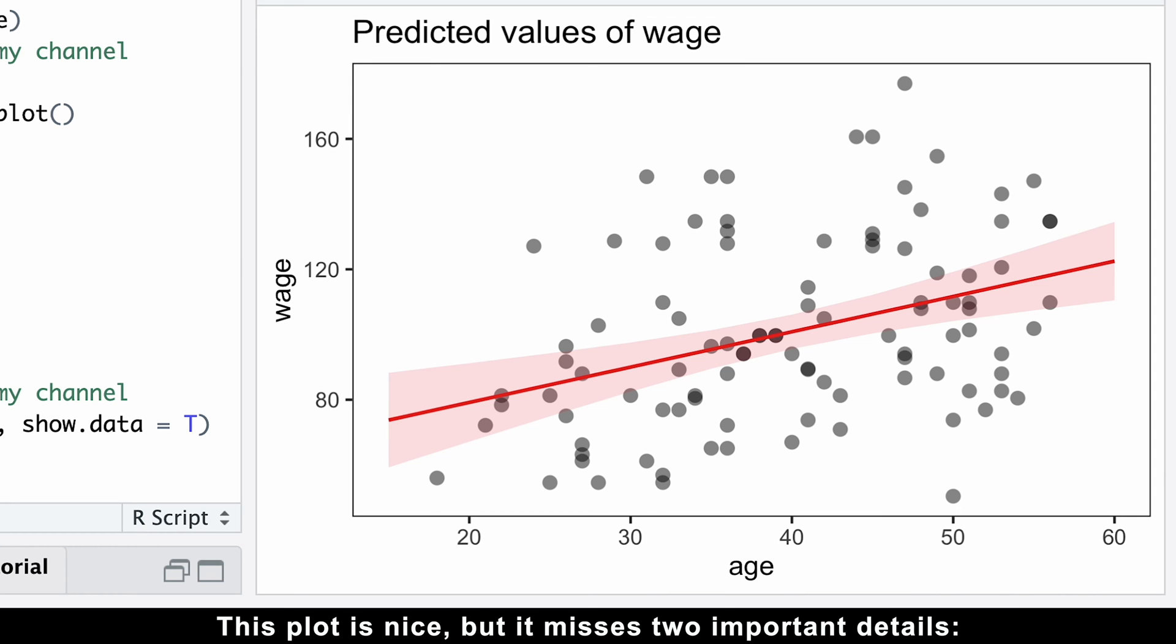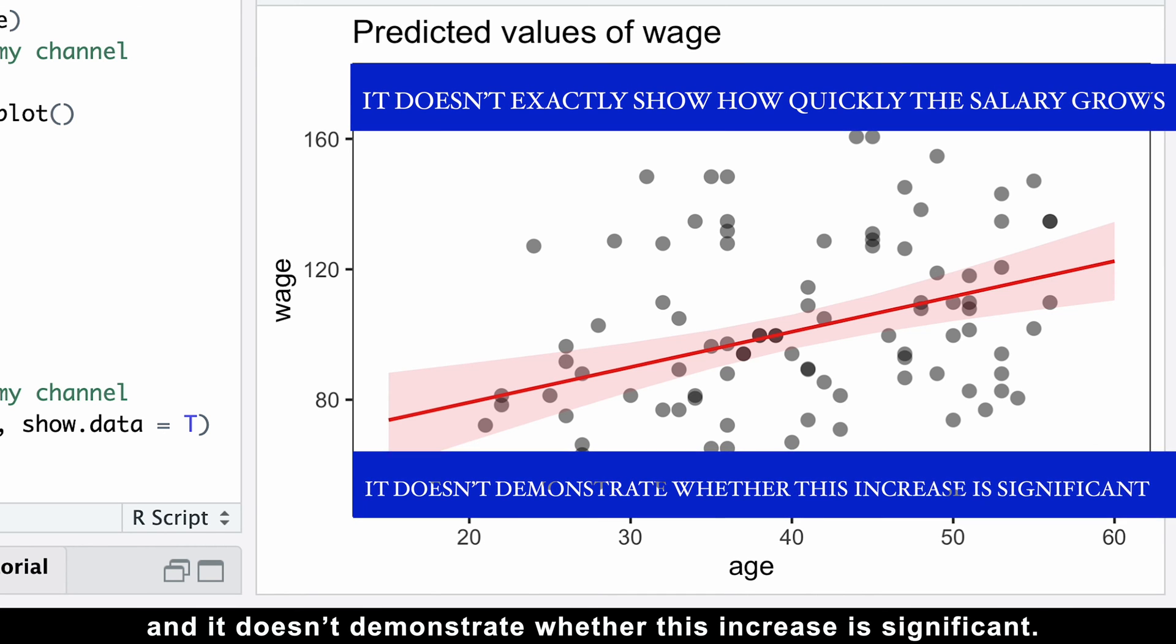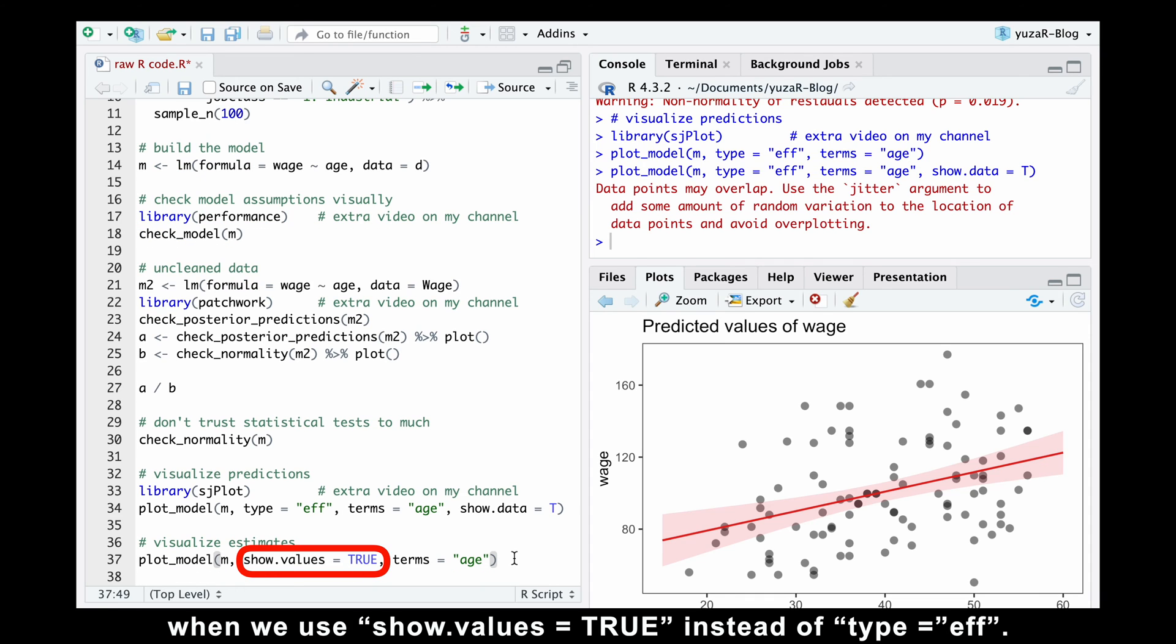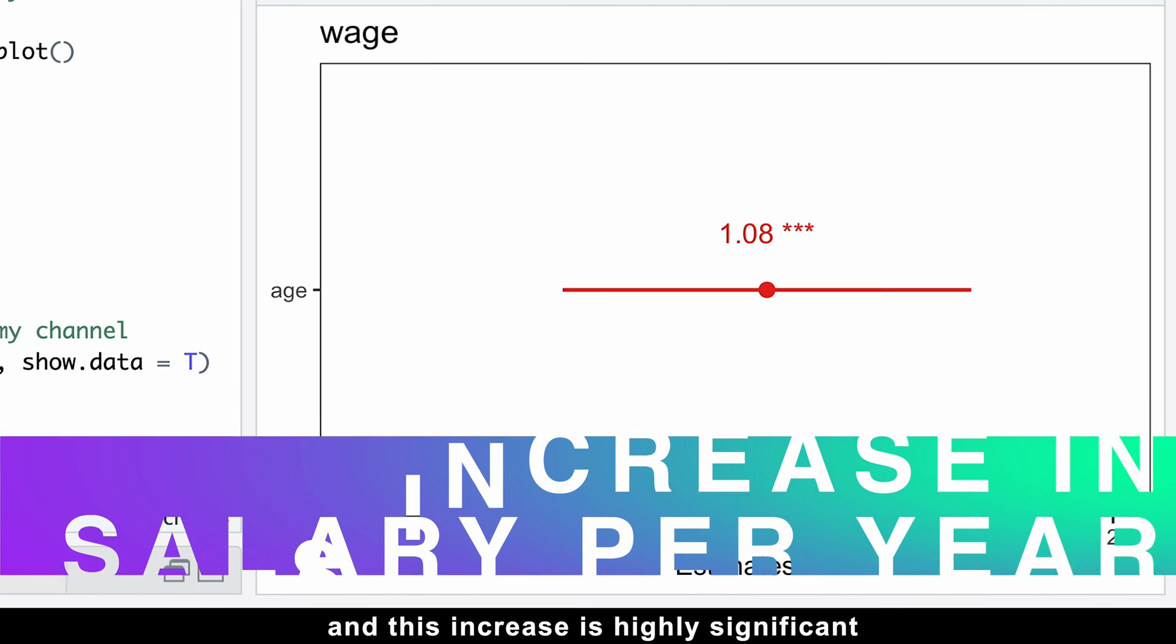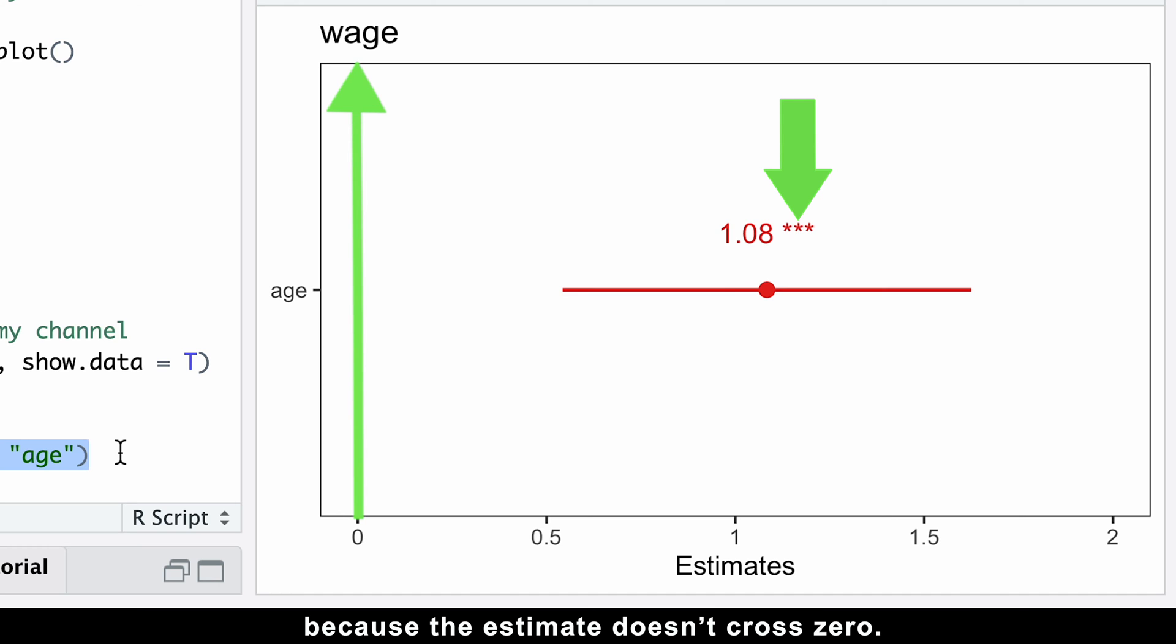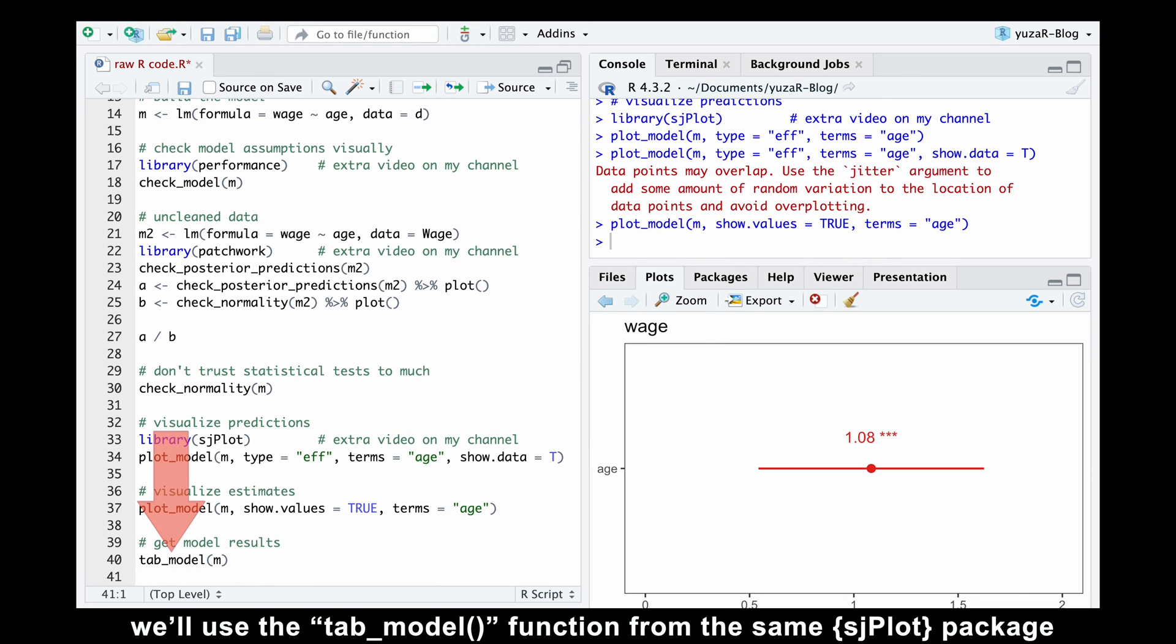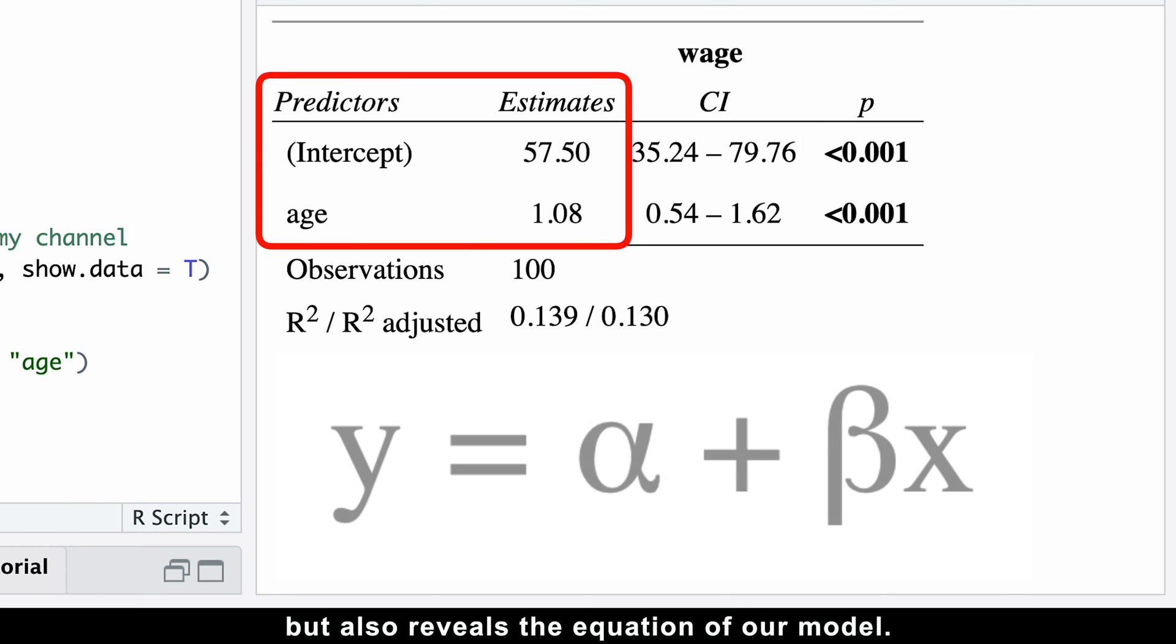This plot is nice, but it misses two important details. It doesn't exactly show how quickly the salary grows, and it doesn't demonstrate whether this increase is significant. The plot_model function solves both problems when we use show.values equals true, instead of type equals effects. Namely, it tells us that we have $1,080 increase in salary per year, and this increase is highly significant because the estimate doesn't cross zero. And while the significant stars are often enough, sometimes we need an exact p-value. To obtain this, we'll use the tab_model function from the same sjPlot package.